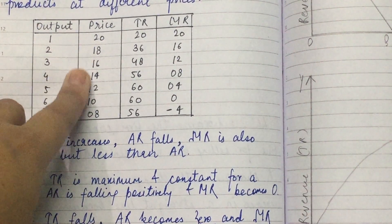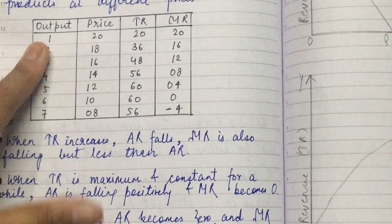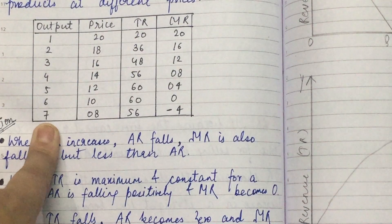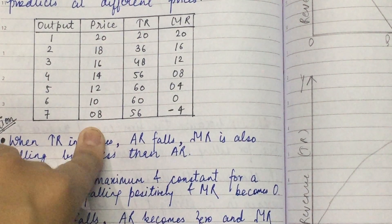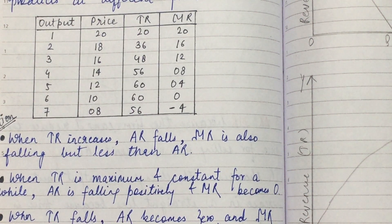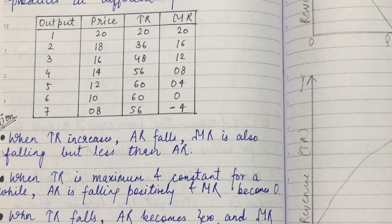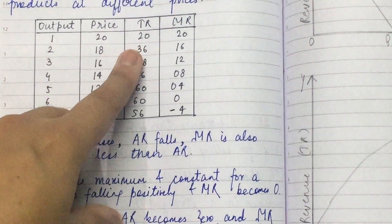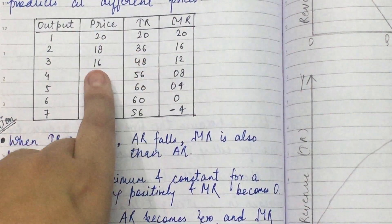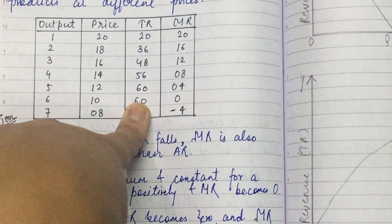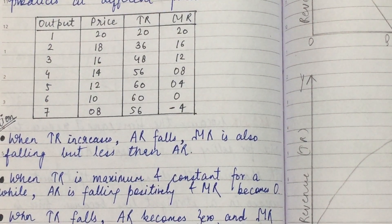Now when you observe the price and output numbers: when you sell 1 unit the price is 20, giving TR of 20. We have learned that the formula for TR is Price into Output. So: 20×1=20, 18×2=36, 16×3=48, 14×4=56, and so on. That is how we calculate TR.